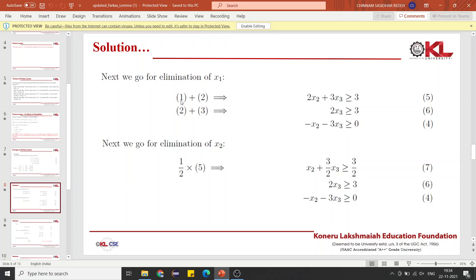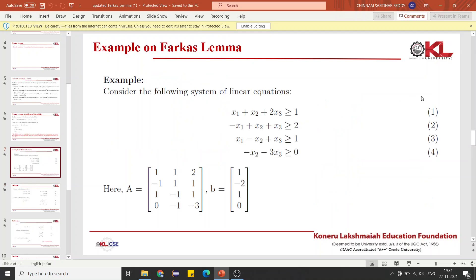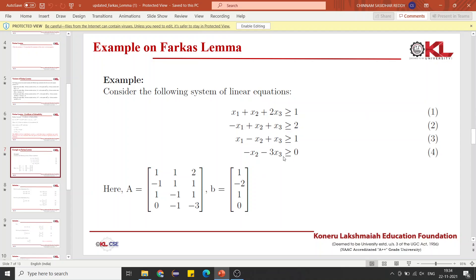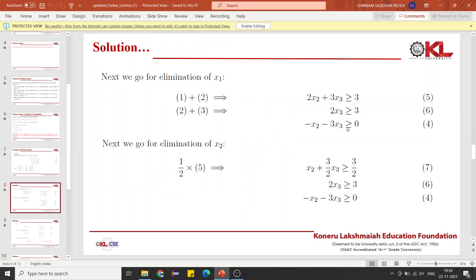One thing is very important: numbering of equations. Equations 1 and 2 give us this equation and we will number this equation as 5. Then we also add 2 and 3. Adding them will eliminate x1 and you will get 2x3 greater than or equal to 3. Don't forget to write 2 plus 3 gives you equation 6. And the fourth equation, minus x2 minus 3x3 greater than or equal to 0, is left as it is.